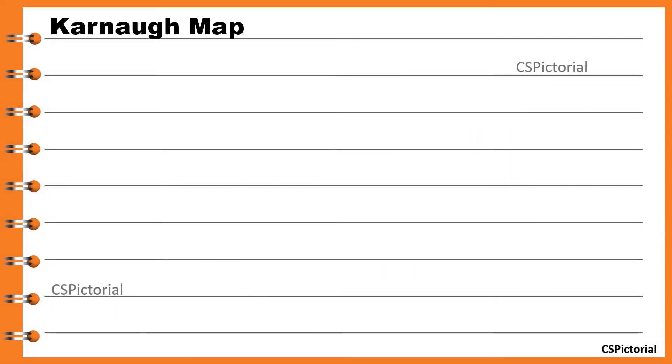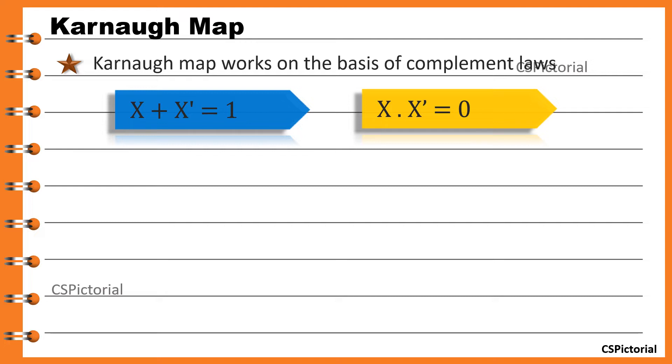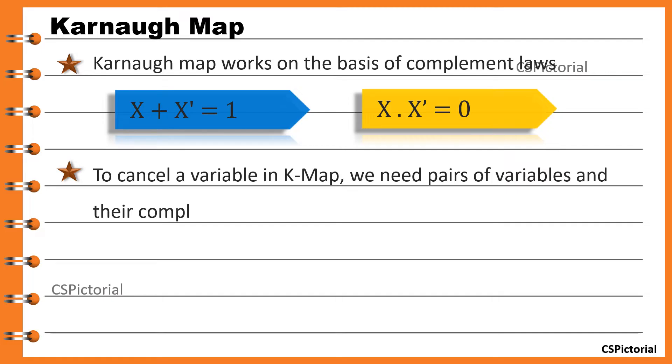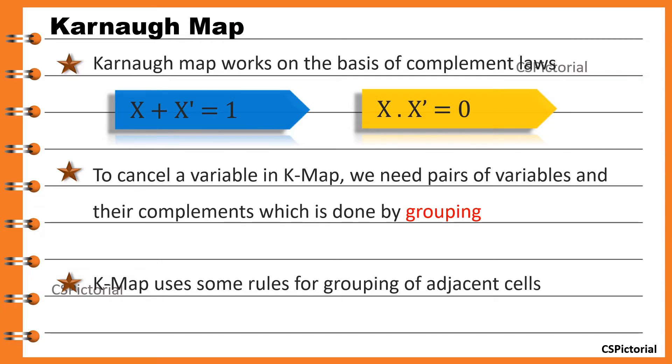Karnaugh map is the method used to minimize and simplify boolean functions. It works on the basis of complement laws: x plus x bar equals 1 and x dot x bar equals 0. Thereby, to cancel a variable in K-map, we need pairs of variables and their complements, which is done by grouping. K-map uses some rules for grouping of adjacent cells. We will check out simple explanations for these rules one by one.